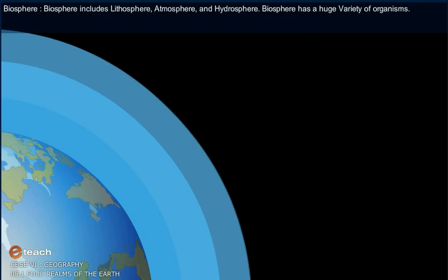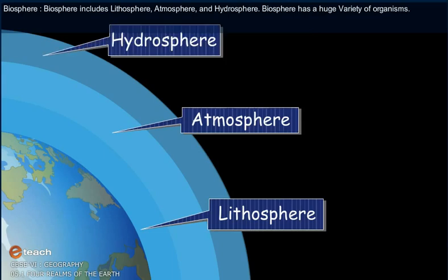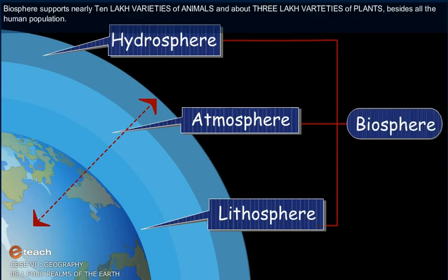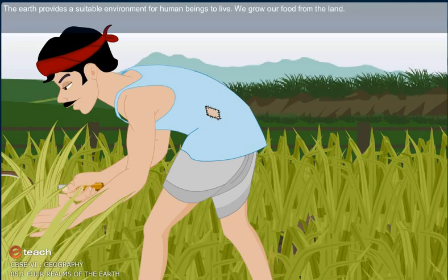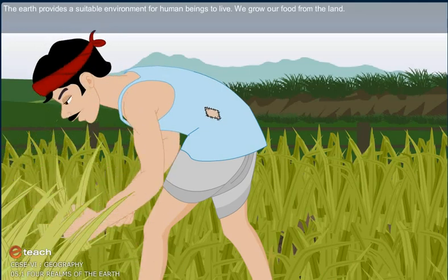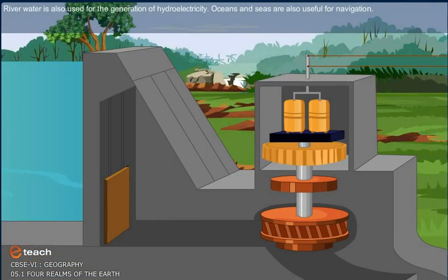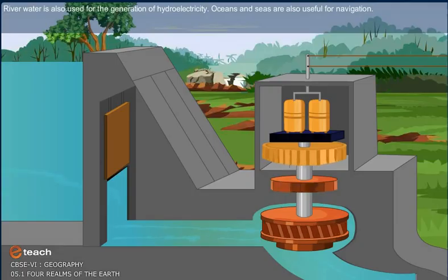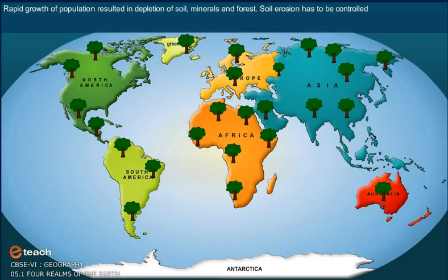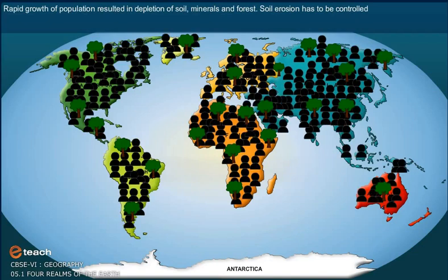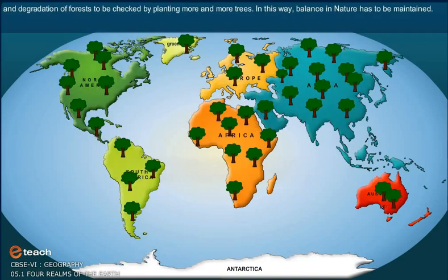Biosphere includes lithosphere, atmosphere, and hydrosphere. Biosphere has a huge variety of organisms. It supports nearly 10 lakh varieties of animals and about 3 lakh varieties of plants, besides all the human population. The Earth provides a suitable environment for human beings to live. We grow our food from the land, which also provides us with a variety of minerals. We build our shelter on the surface of the Earth. River water is used for generation of hydroelectricity, and oceans and seas are useful for navigation. Rapid growth of population has resulted in depletion of soil, minerals, and forests. Soil erosion has to be controlled and degradation of forests must be checked by planting more and more trees.